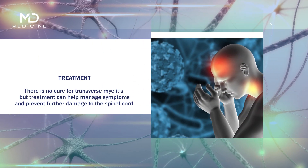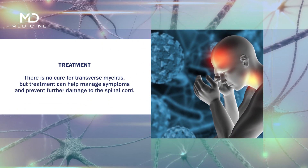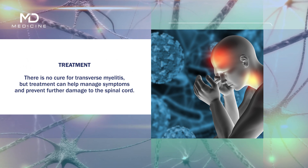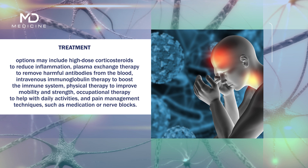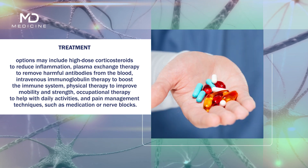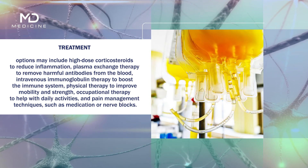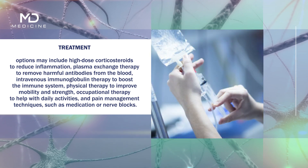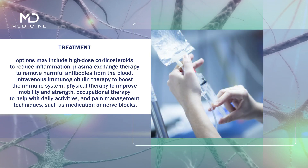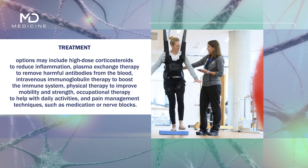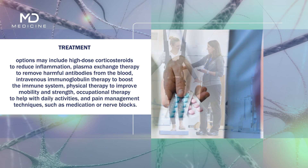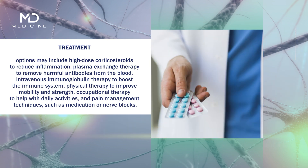There is no cure for transverse myelitis, but treatment can help manage symptoms and prevent further damage to the spinal cord. Treatment options may include high-dose corticosteroids to reduce inflammation, plasma exchange therapy to remove harmful antibodies from the blood, intravenous immunoglobulin therapy to boost the immune system, physical therapy to improve mobility and strength, occupational therapy to help with daily activities, and pain management techniques such as medication or nerve blocks.